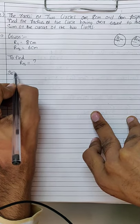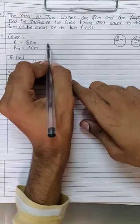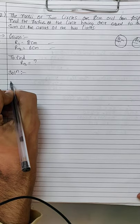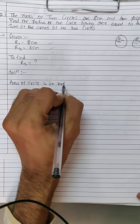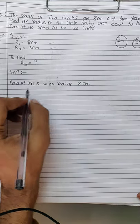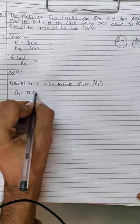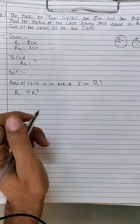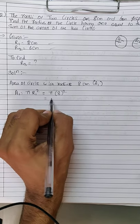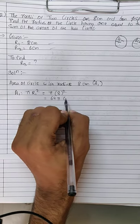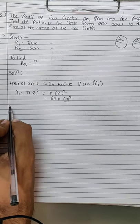Solution: First, find the area of the circle with radius 8 cm. Let's call it A1. A1 = πr1² = π × 8² = 64π cm². Do not forget to write the units — if you don't write units in the exam, you'll lose marks.